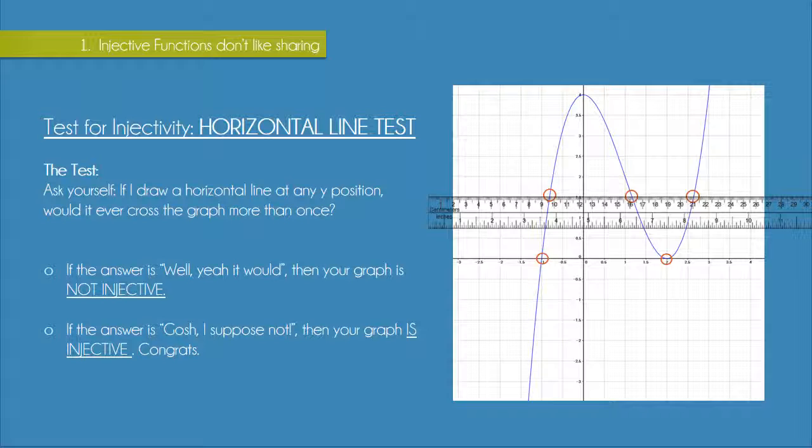If we use the horizontal line test on a linear function, for example, the ruler would only touch the graph once at every y position. So we would conclude that the linear function was injective.